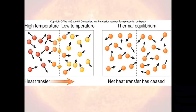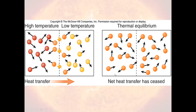Here's an image of this: if you have a hot object and a cooler object, heat will transfer from the hot object to the cool object. Eventually, the two objects are in thermal equilibrium and heat transfer has stopped.